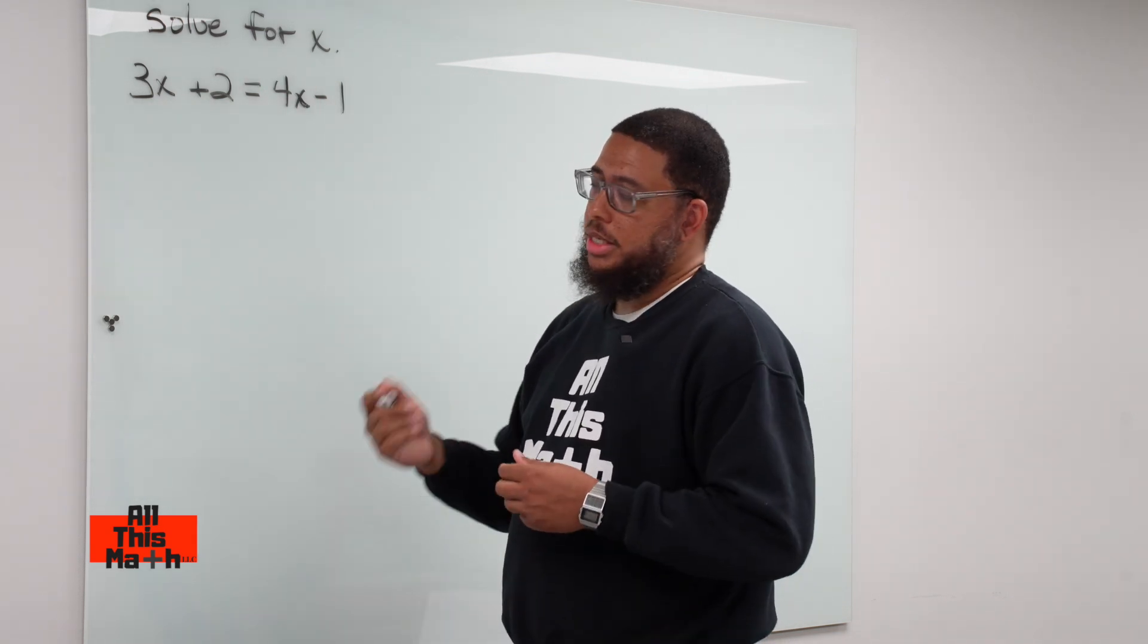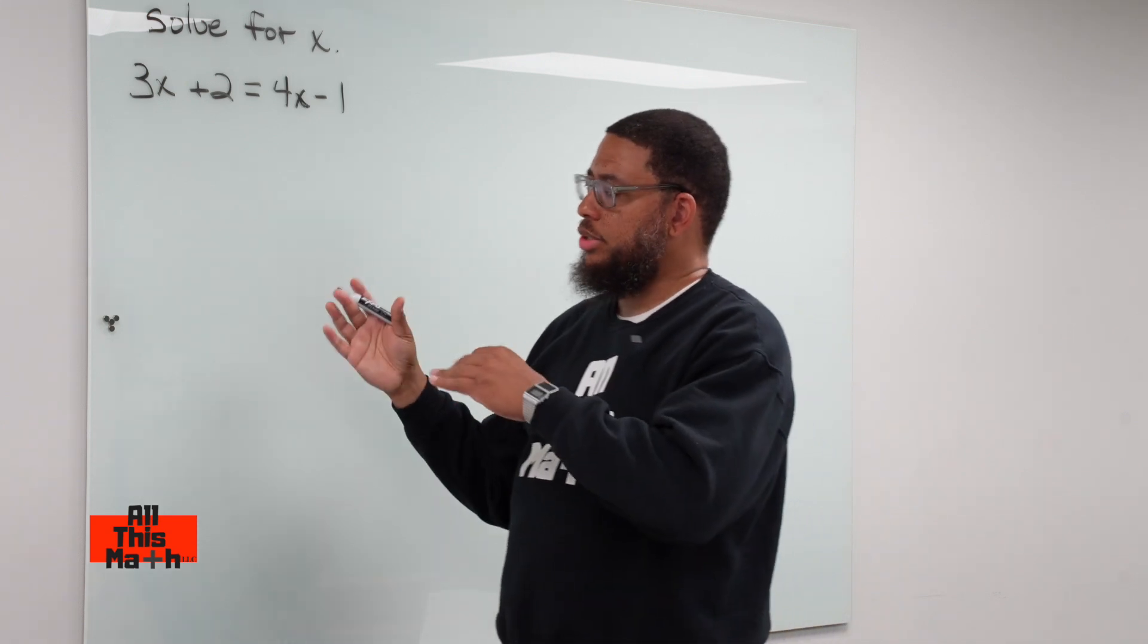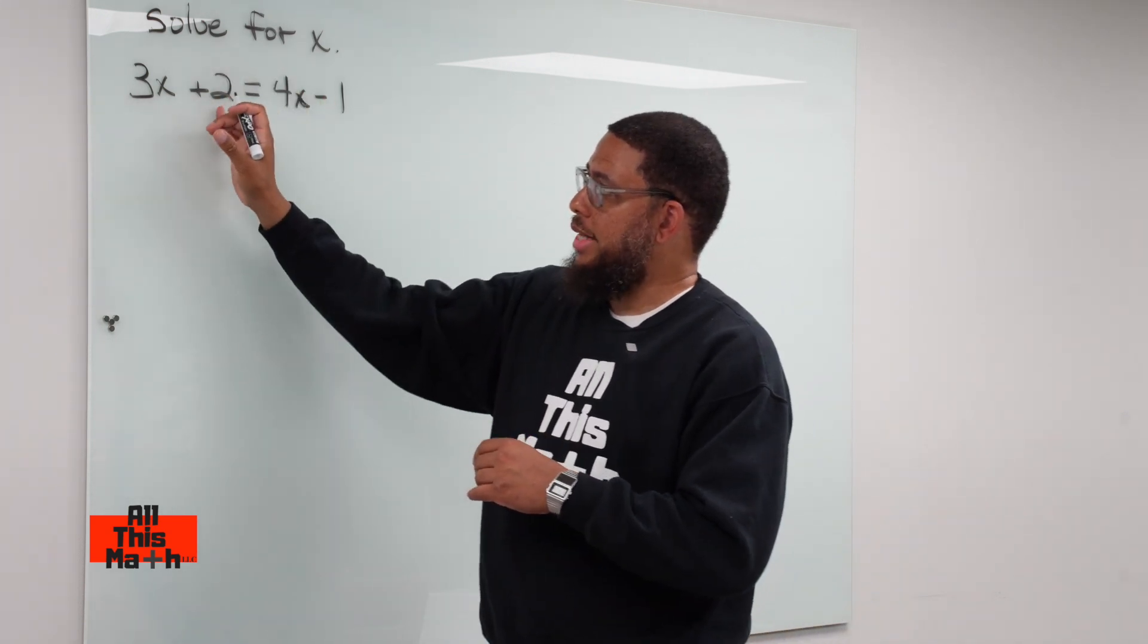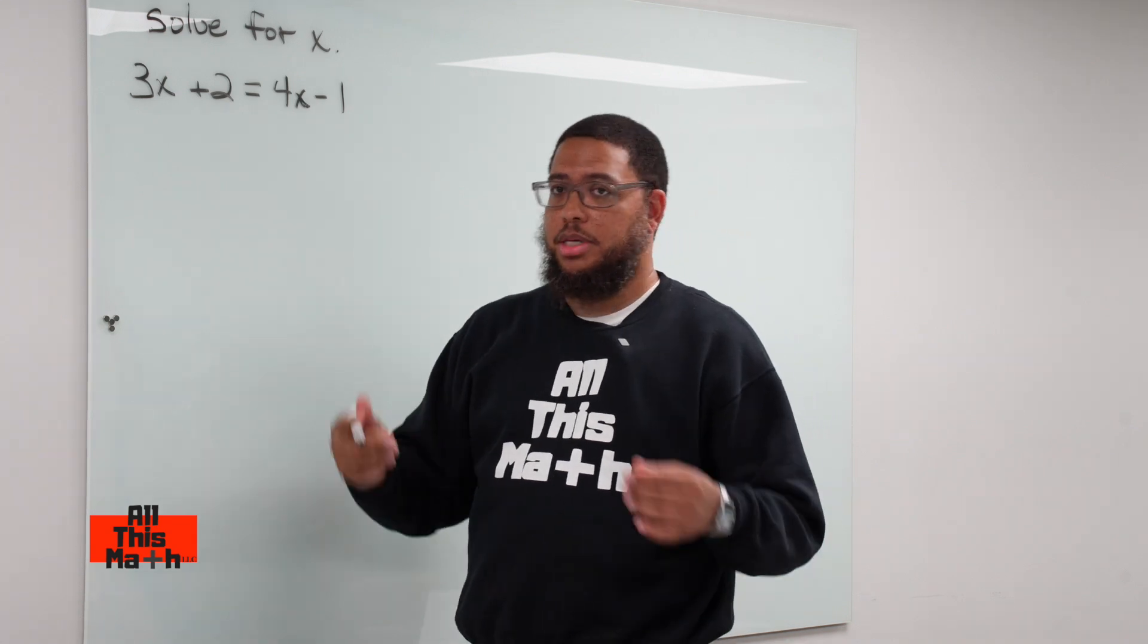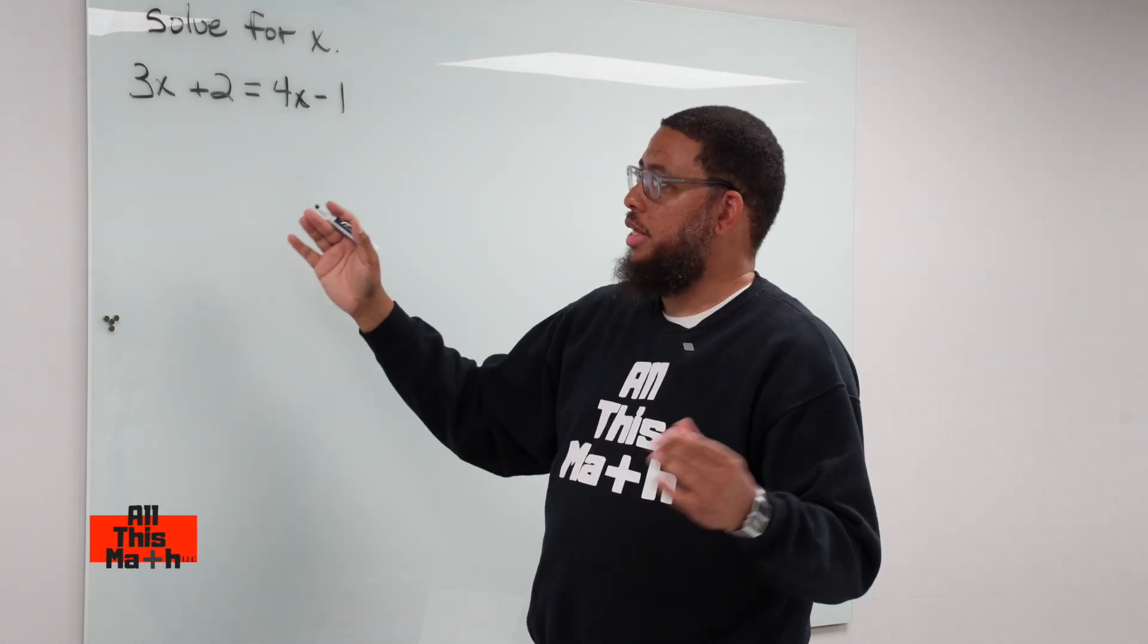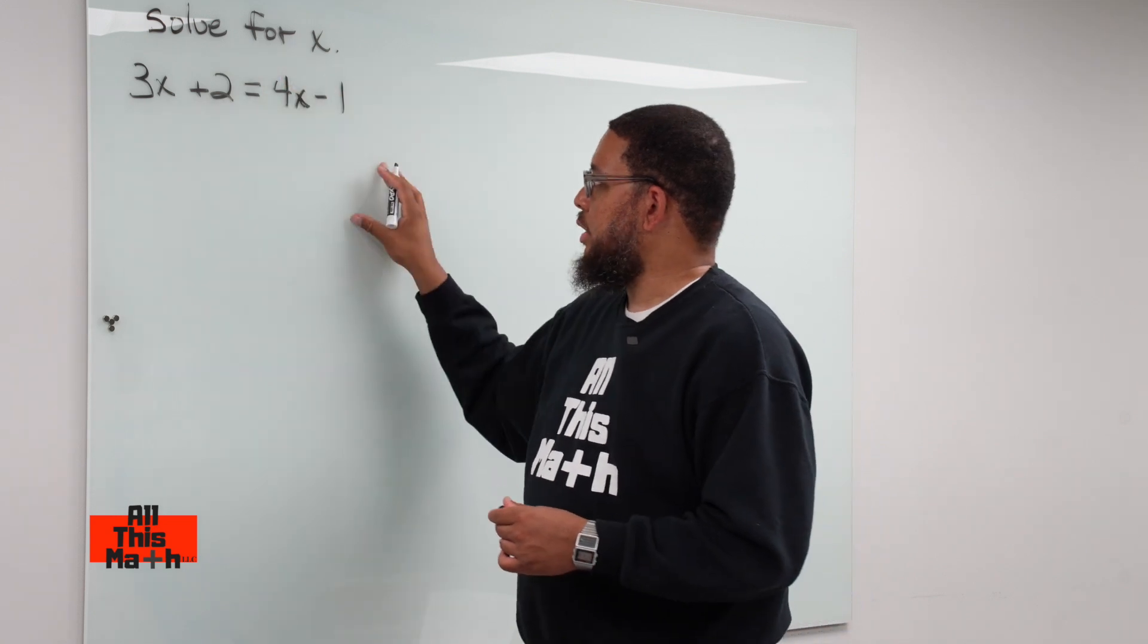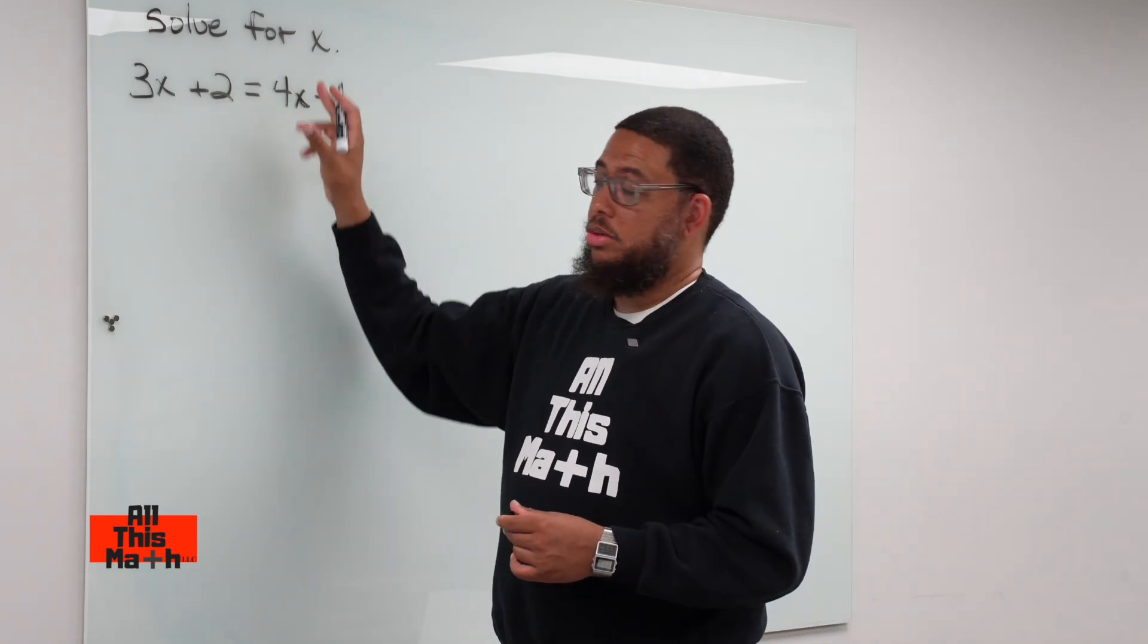But the equation is essentially neater and easier to work with if all your x's are organized together and all your constants. 2 is a constant and negative 1 is a constant. Why are they called constants? Because they're never going to be anything but that number. They're constantly going to be that number. So if all our constants are on one side and all our variables, which are x's, are on the other side.